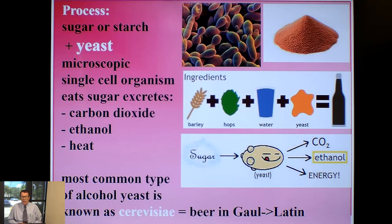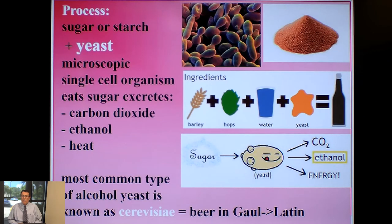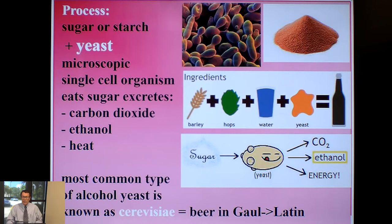It's interesting to note that there are different names for yeasts used throughout the world, but the most common yeast used for making alcohol is called cerevisiae, a Latin name used in Gaul when the Romans were conquering the region. The beer that the Gauls drank was called that, and it has made its way into a number of beer-related names throughout the world today. For instance, cerveza in Spanish for Mexican beer.